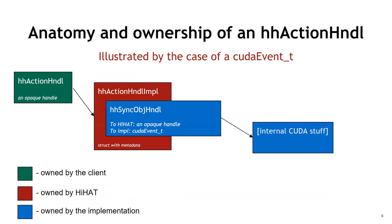To delineate the boundaries more clearly: on the left in dark green is the action handle — the opaque handle owned by the client — which points to an internal implementation owned by HI-HAT. Part of the internal implementation is an opaque handle that is meaningful to the implementation. For example, it could be a CUDA event or a pointer to a more complex data structure.